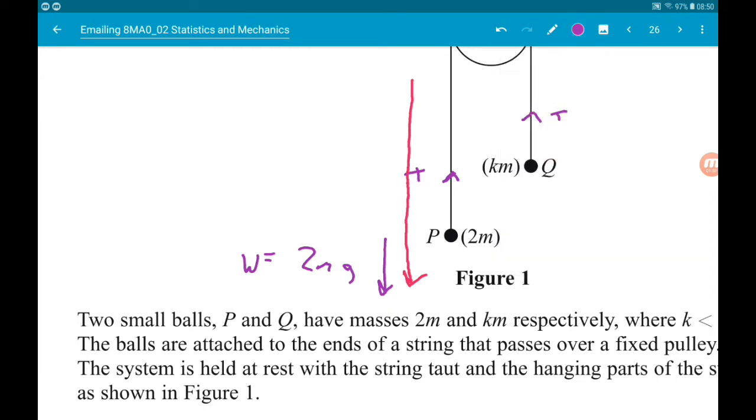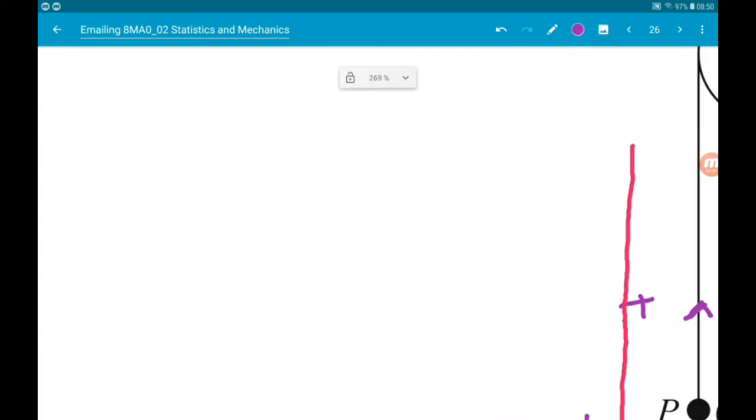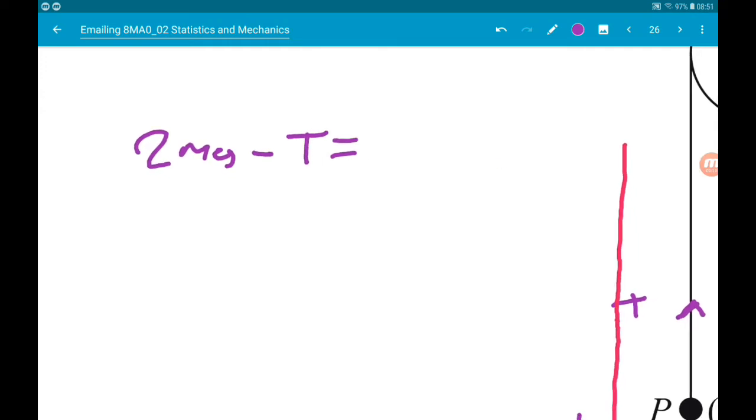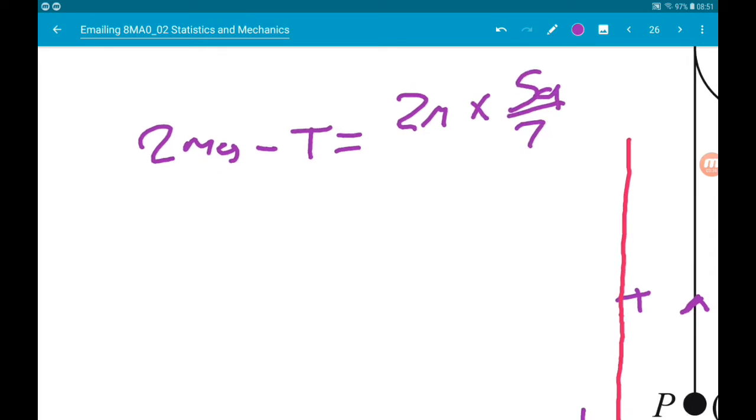So weight is winning. So what we can say is that 2MG minus the upward force of tension is equal to the upward force going downwards, which is mass times acceleration. Now we know the acceleration is 5G over 7. So 2MG minus T is equal to 2M times 5G over 7. So we got 2MG minus tension is equal to 10MG over 7.